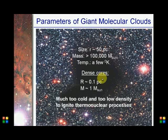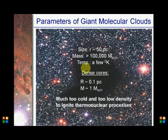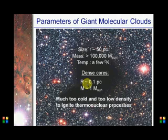The parameters of giant molecular clouds: the radius can be up to 50 parsecs, mass up to 100,000 solar masses, and their temperature is low — just a few kelvins. Their dense cores, which form the protostars, have a radius of about 0.1 parsecs.